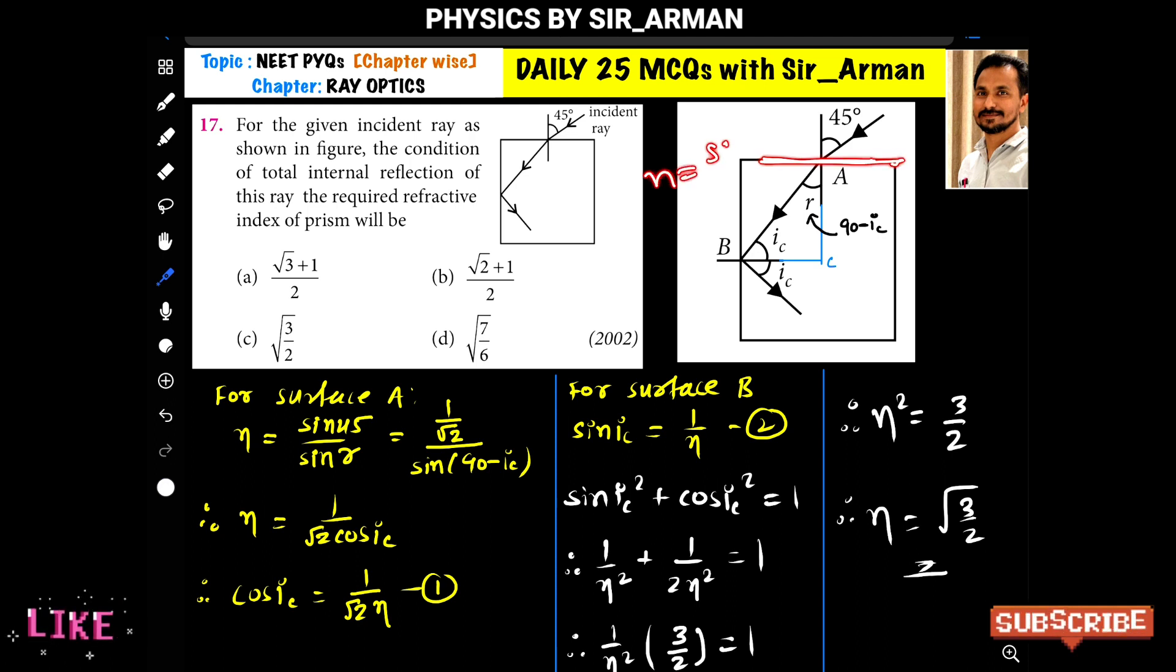Then we know that for Snell's law, n equals sine i by sine r, that is sine 45 by sine r. Now sine 45 is 1 by root 2 and r, now if we see this triangle.